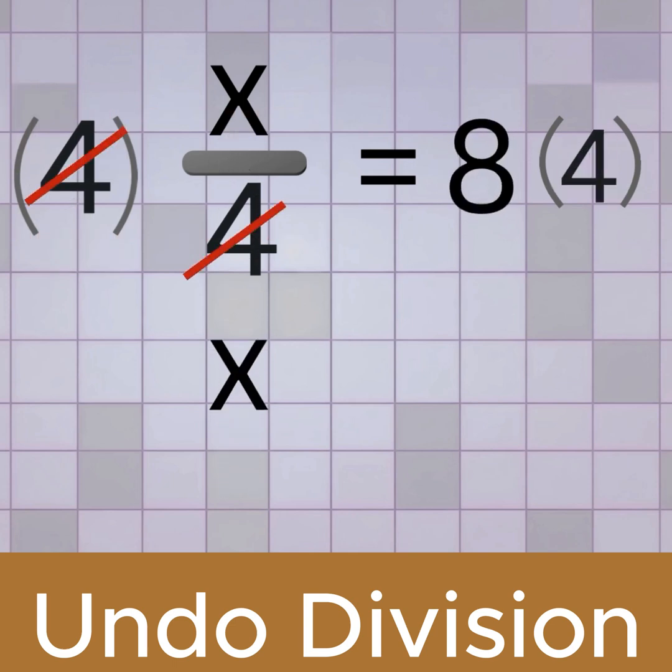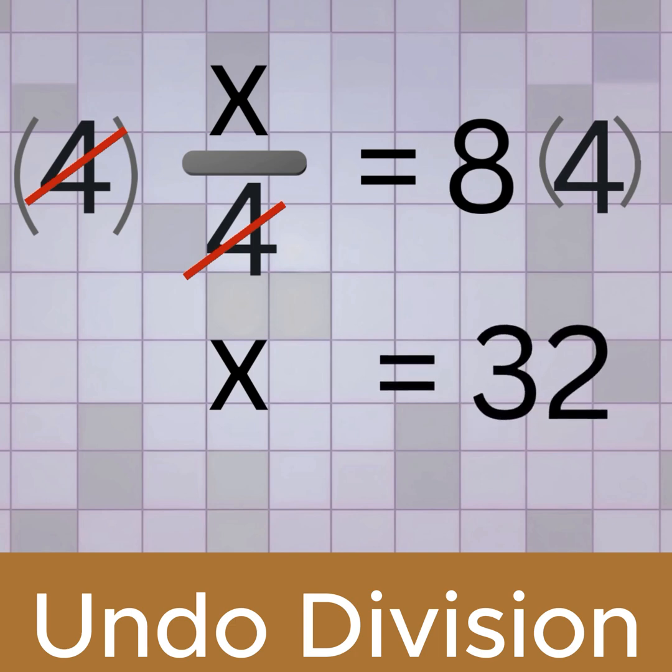On the right, 8 times 4 equals 32. So the final answer is x equals 32.